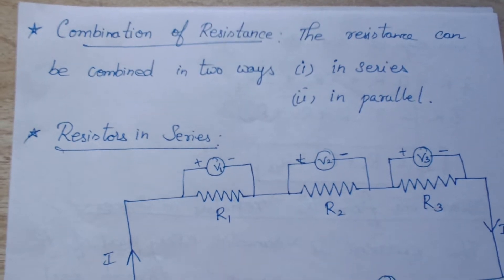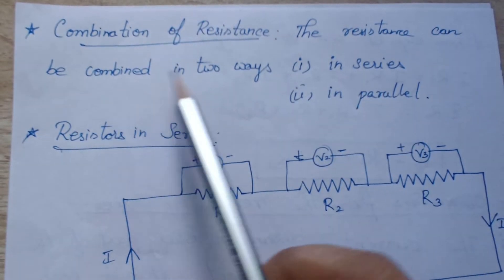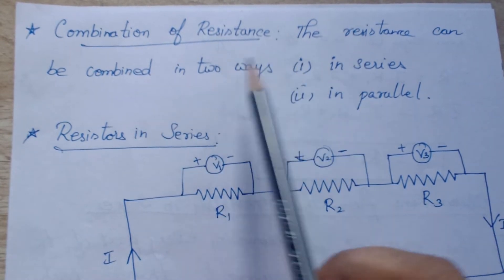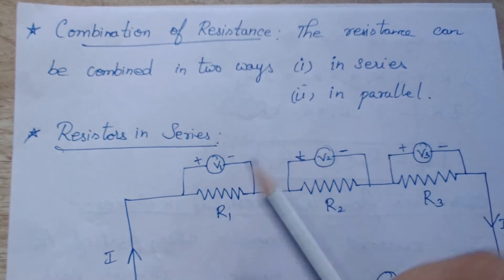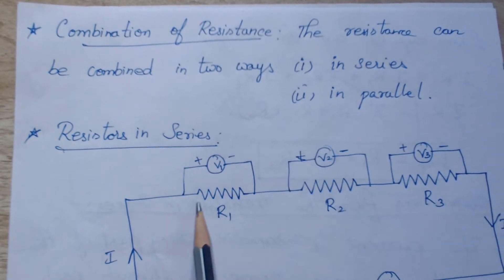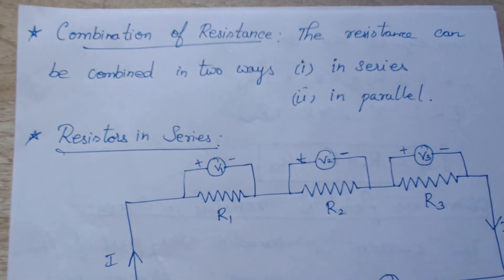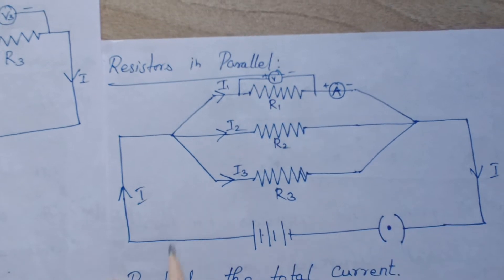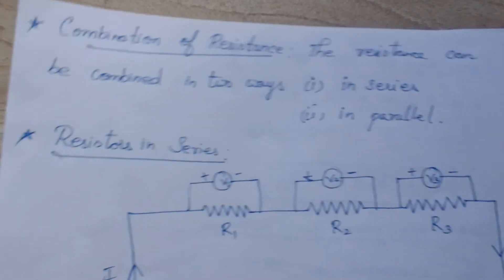Hi dear, today we will start with the combination of resistance. Resistance can be combined in two ways in a circuit — in series or in parallel. So the resistors can be connected in series, or connected in parallel to each other. In two ways we can connect the resistors.